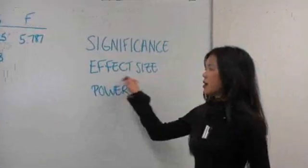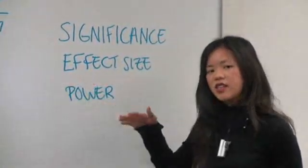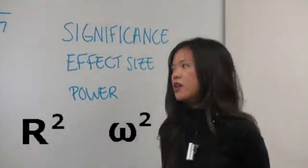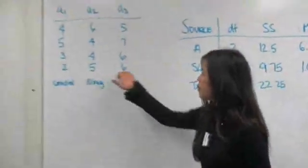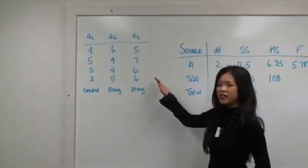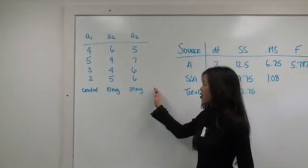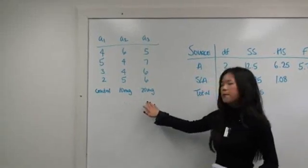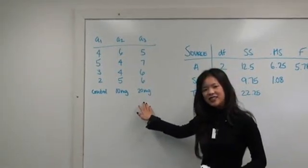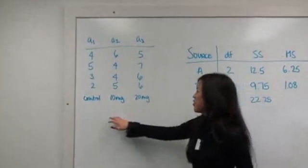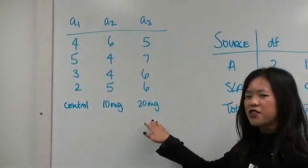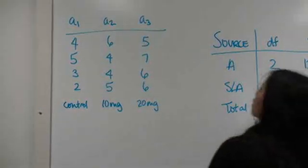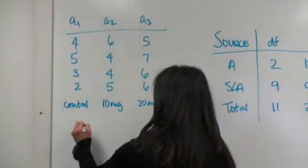Today we're going to be talking about effect size, and that's actually eta squared and omega squared. If you'll remember from last time, we've been talking about three groups of people, randomly selected to avoid bias, and they're getting different amounts of a made-up drug called Statistoprazole. The first group gets nothing, the second group gets 10 milligrams, and the third group gets 20 milligrams. This is our independent variable, what group they're going to go into.